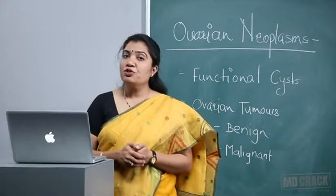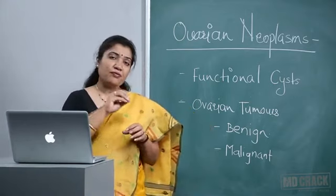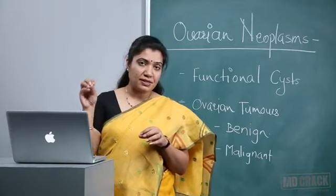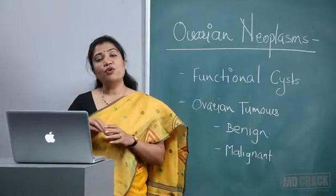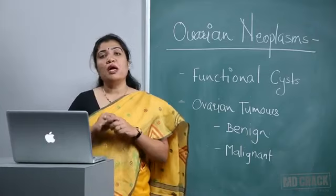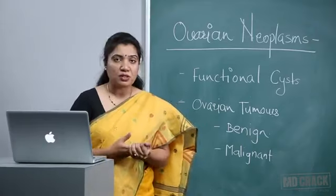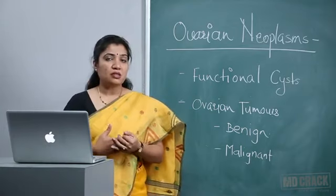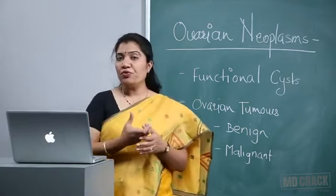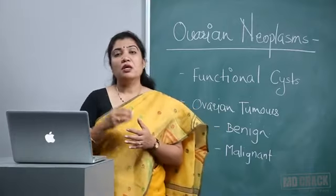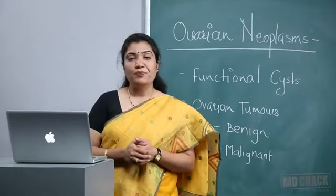In PCOD, there is anovulation. The Graafian follicle, growing gradually in size, accumulates at the periphery of the ovary, giving a pearl-string appearance on ultrasound. This multicystic ovary — that is, a bulky ovary with thick medulla — is typical of PCOD.